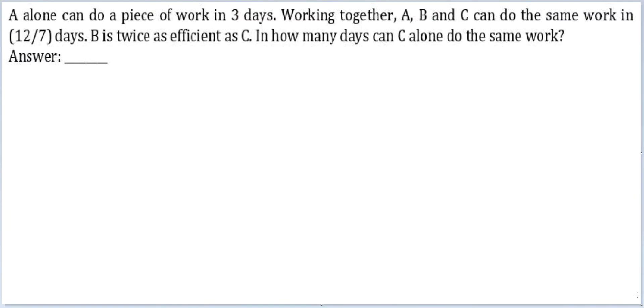Let's look at this question. A alone can do a piece of work in 3 days. Working together, A, B and C can do the same work in 12 by 7 days. B is twice as efficient as C. In how many days can C alone do the same work?